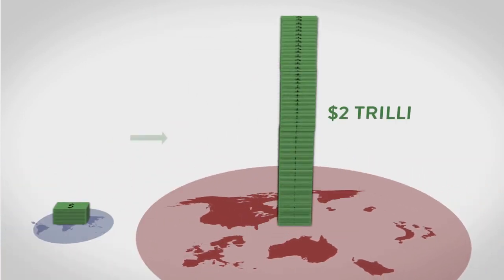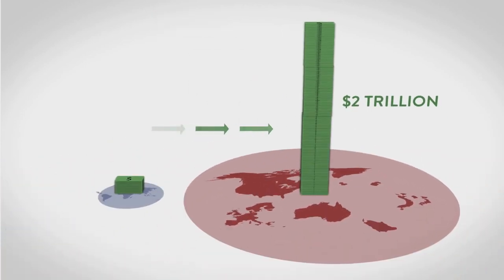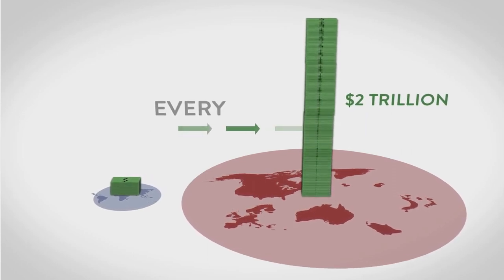Altogether, that's more than $2 trillion that flows from some of the poorest parts of the world to the richest. Every year.